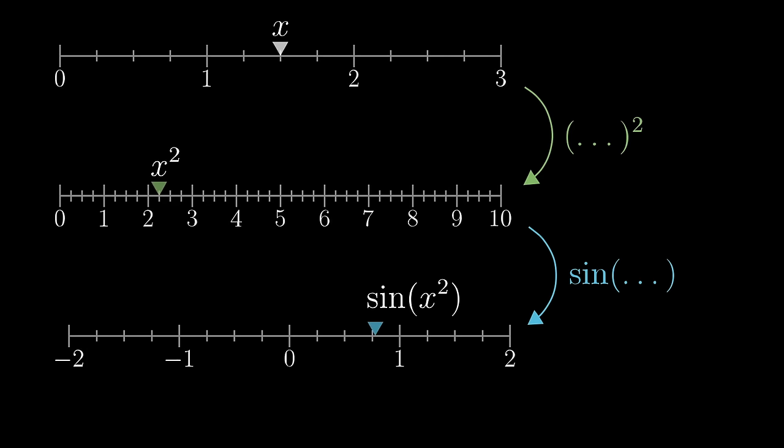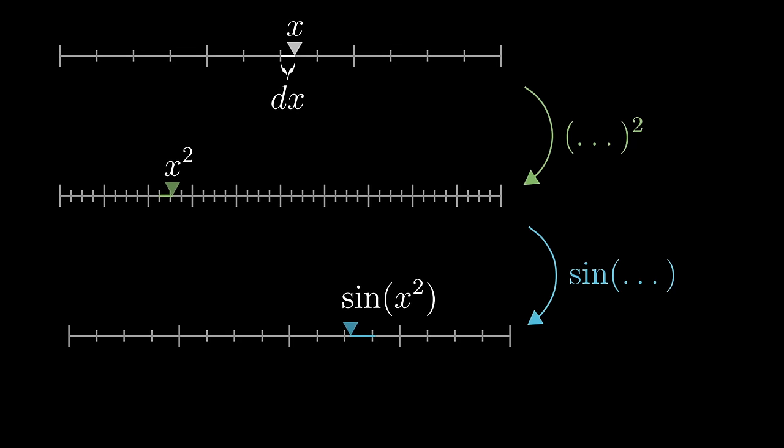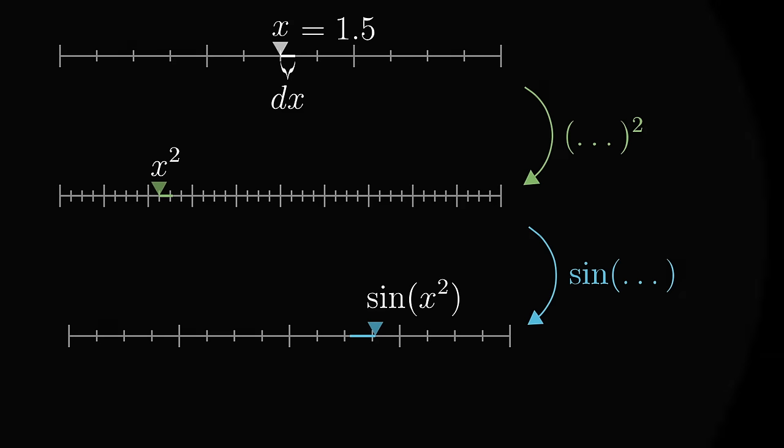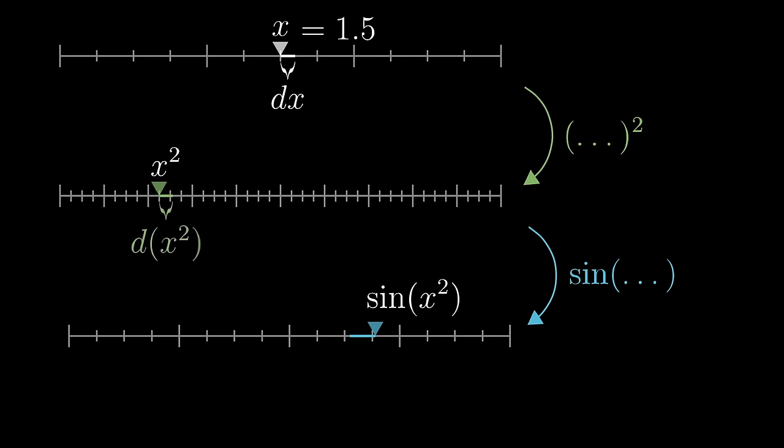So for the derivative, let's again start by just nudging that x value by some little dx. And I always think that it's helpful to think of x as starting at some actual concrete number, maybe 1.5 in this case. The resulting nudge to that second value, the change in x squared caused by such a dx, is d x squared. And we could expand this like we have before as 2x times dx, which for our specific input would be 2 times 1.5 times dx. But it actually helps to keep things written as d x squared, at least for now.